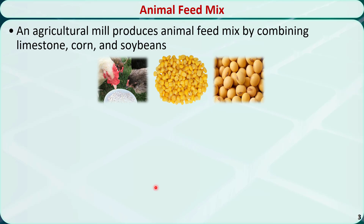Let's see an example. An agricultural meal produces animal feed mix by combining limestone, corn, and soybeans. Interesting fact: milled limestone in animal feed will provide calcium for bone development and help the formation of eggshells.